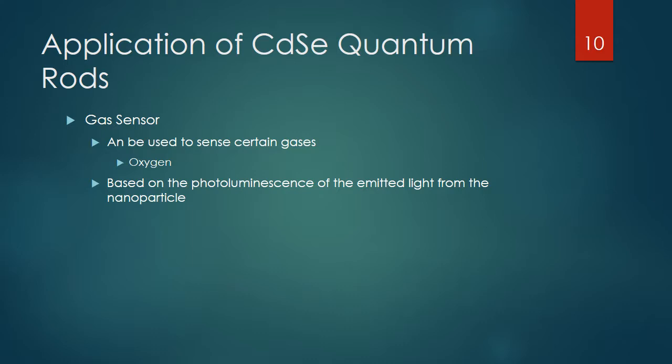This application isn't studied as much because a lot of cadmium selenide quantum dots and rods typically have a very thick organic ligand layer surrounding them, which makes detection difficult — not as much of the gas will actually be able to interact with the cadmium selenide nanoparticle itself, but will just interact with the organic ligand layer. This application sometimes requires a different synthesis, but cadmium selenide rods can be used to detect certain gases in the environment.